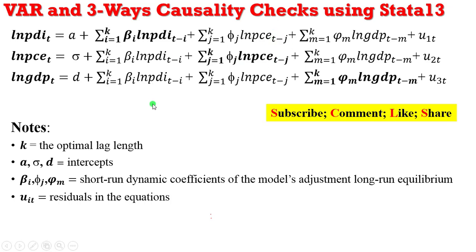Now, how do we explain bidirectional causality? Still using the PDI and the PCE equations. If the lagged values of the PCE variable are statistically significant in the PDI equation, and the lagged values of the PDI regressors are statistically significant in the PCE equation, then we can conclude that there is a bidirectional causality from PCE to PDI and vice versa.